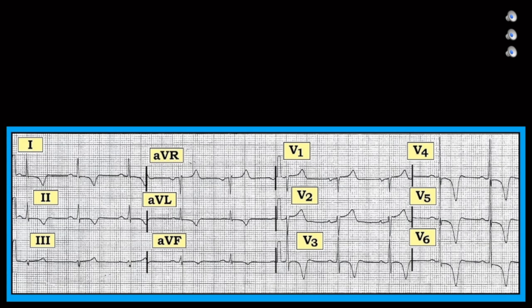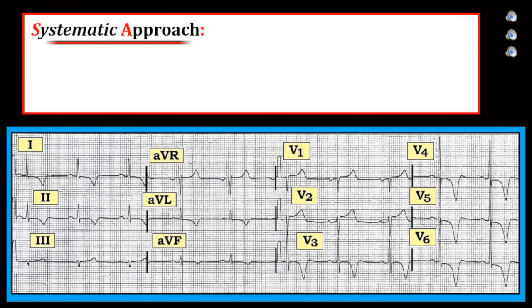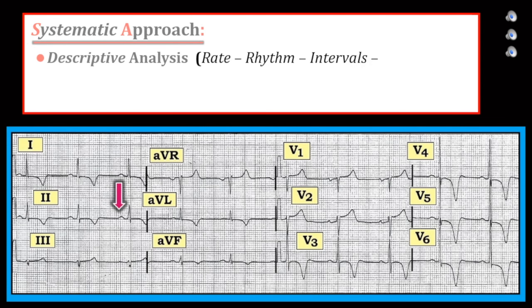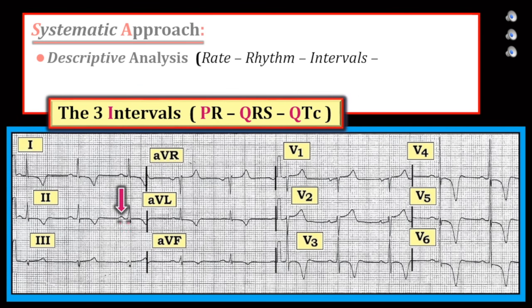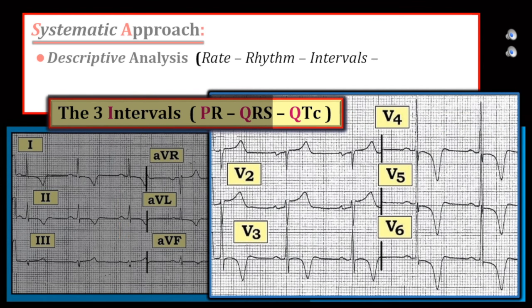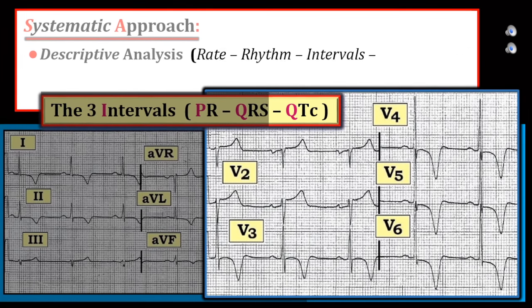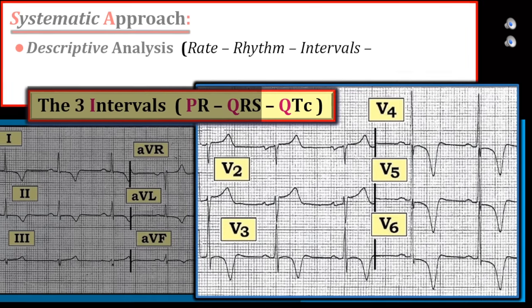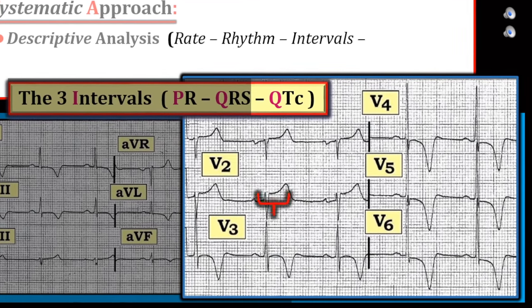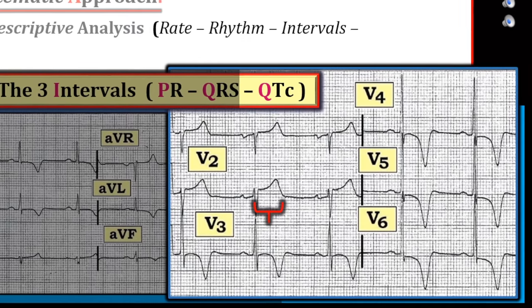Let's now apply these comments to interpreting this tracing, beginning with descriptive analysis. The rhythm is sinus at a rate of about 60 per minute. The PR and QRS intervals are normal — the PR interval is not more than a large box in duration, and the QRS duration is not more than half a large box in duration. Despite the dramatic T-wave appearance, the QTc, that is the QT interval corrected for heart rate, does not appear to be long. At most, I would estimate the QTc to be no more than 0.44 second. In general, the QTc is normal if less than 0.44 second.